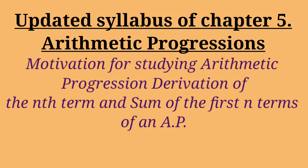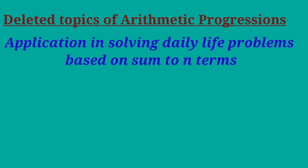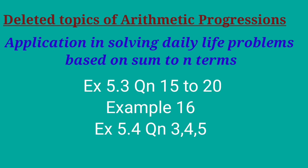The updated syllabus for Chapter 5 Arithmetic Progressions includes motivation for studying AP, derivation of the nth term, and the sum of first n terms of an AP. The deleted topic is applications in solving daily life problems based on sum to n terms. The deleted exercises are: Exercise 5.3, Questions 15 to 20 (all application-based word problems); Example 16; and Exercise 5.4, Questions 3, 4, and 5.